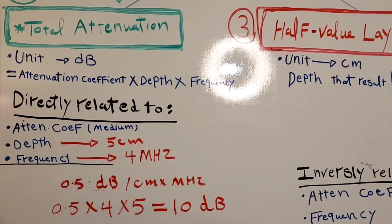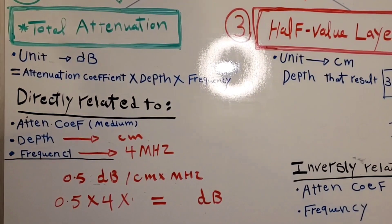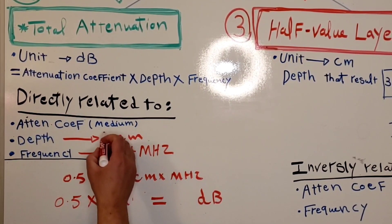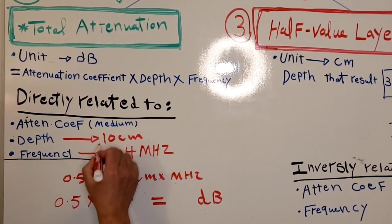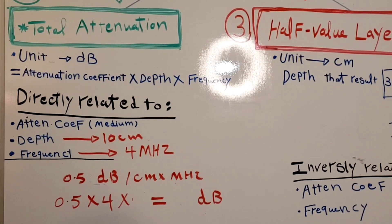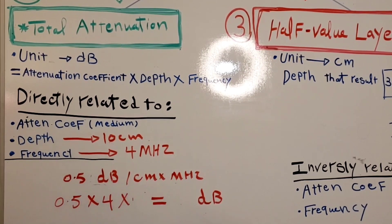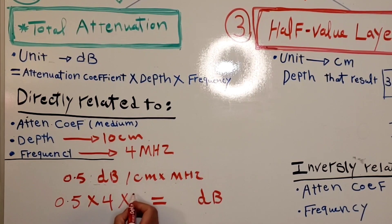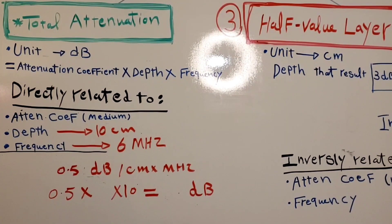Another example: how much attenuation if sound traveled 10 centimeters at the same frequency of 4 megahertz? Again, assuming soft tissue with attenuation coefficient 0.5 decibels per centimeter per megahertz, multiply 0.5 by 4 by 10 — that equals 20 decibels.